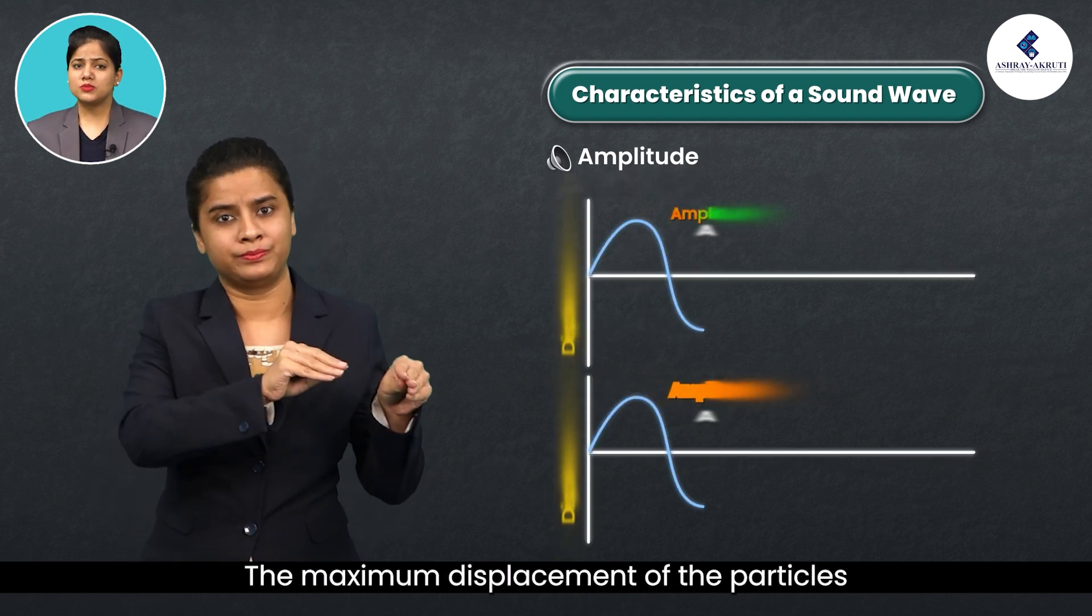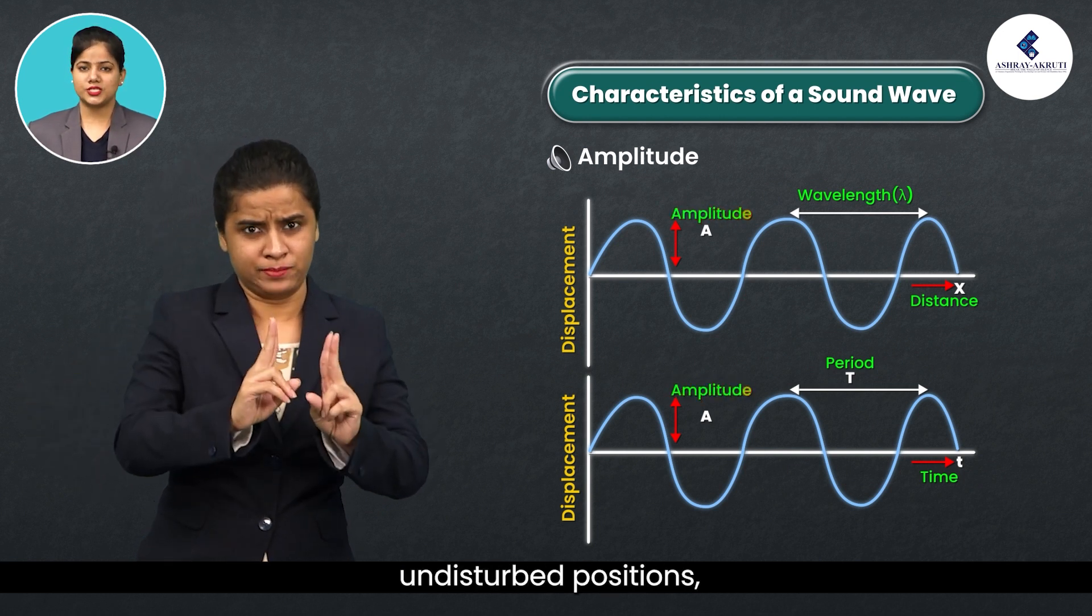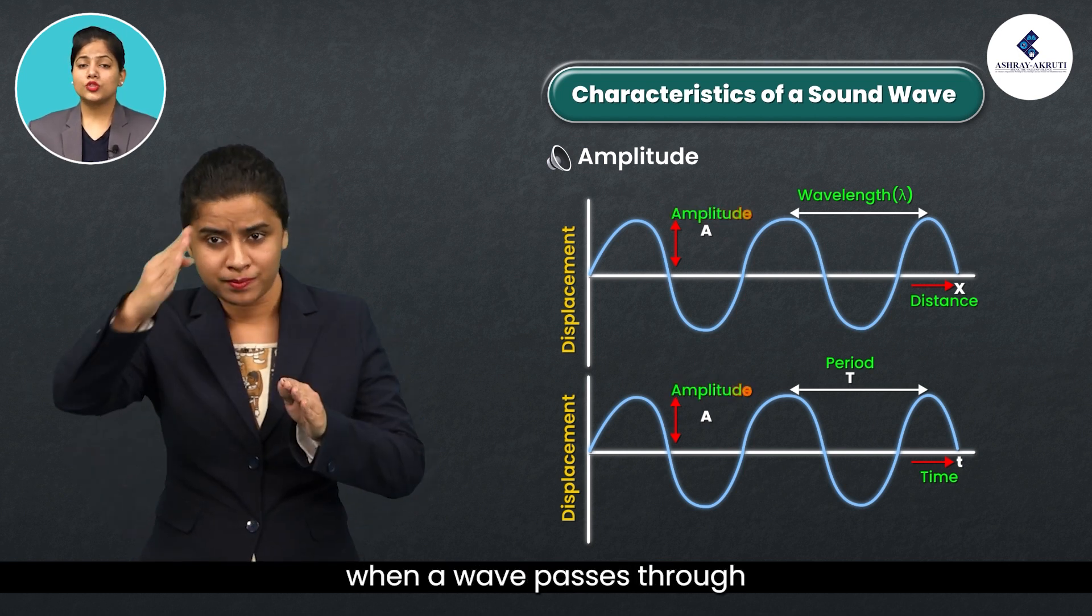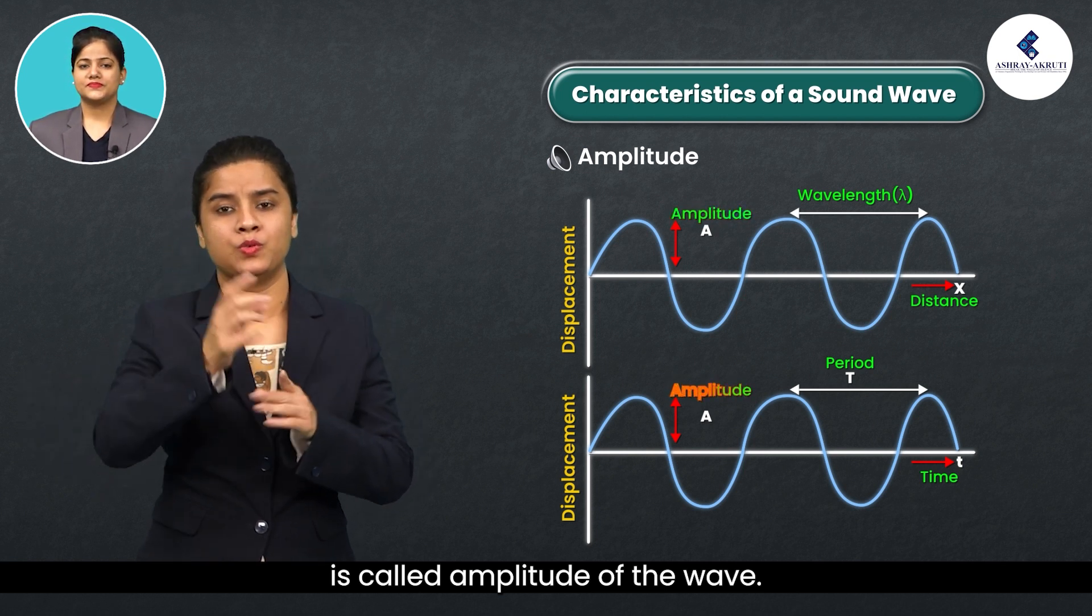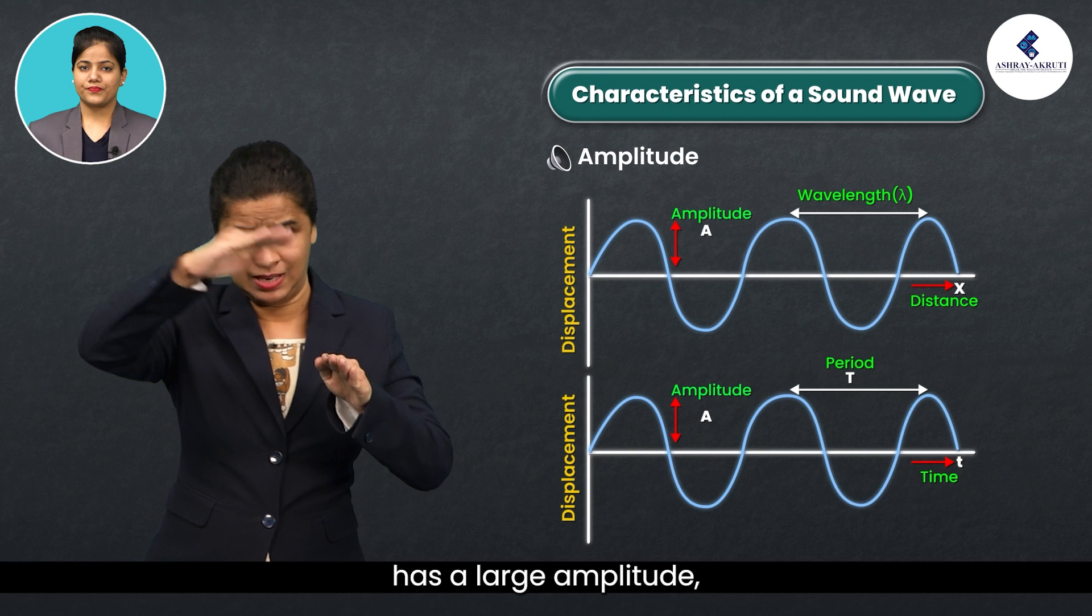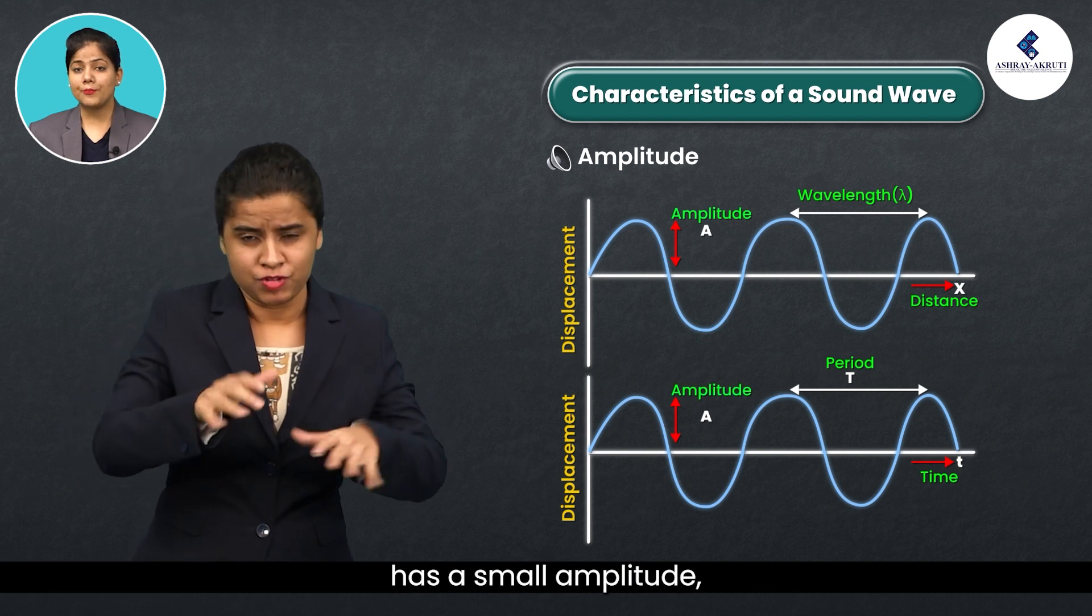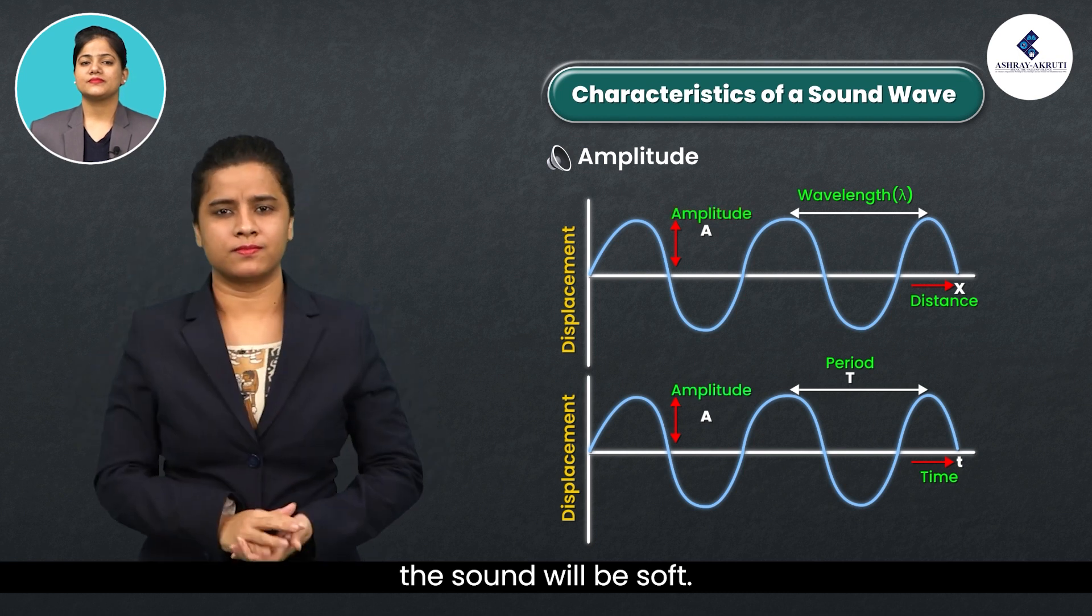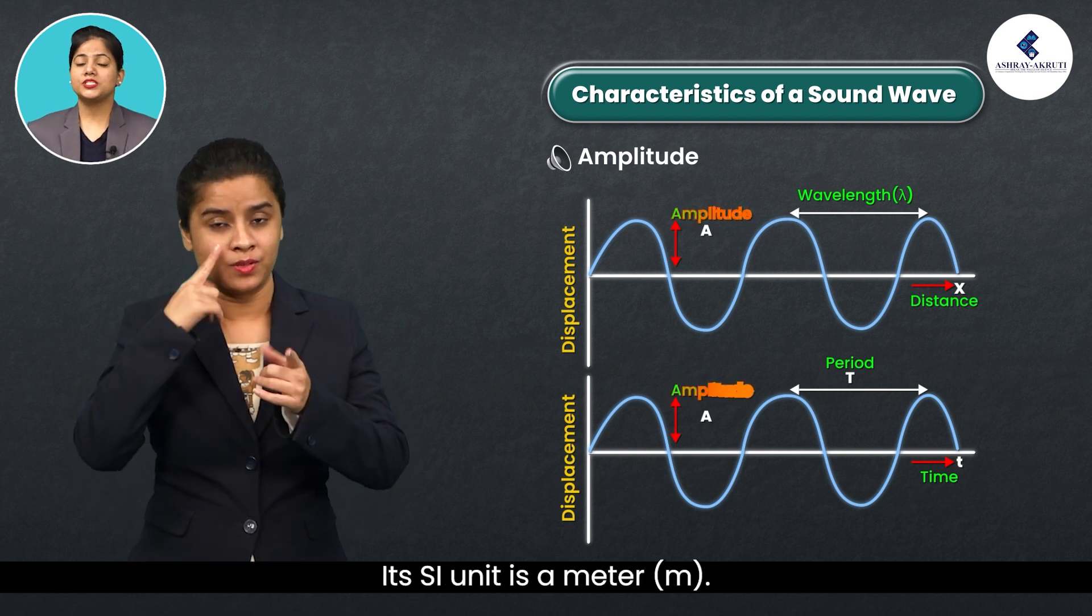The maximum displacement of the particles of the medium from their original undisturbed positions when a wave passes through the medium is called amplitude of the wave. If the vibration of a particle has a large amplitude, the sound will be loud and if the vibration has a small amplitude, the sound will be soft. Amplitude is denoted as A. Its SI unit is meter (m).